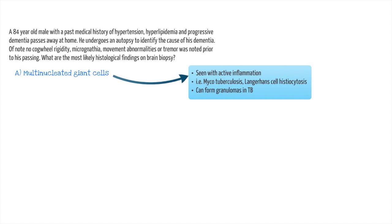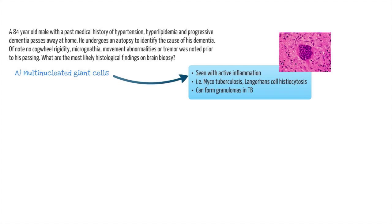Given these findings, let's proceed to look at the answers. Our first potential choice is multinucleated giant cells. As the name sounds, these are large cells that have more than one nucleus. They tend to arise during an active mycobacterium infection and will eventually form the granulomas seen in long-standing tuberculosis infection. Given infection is not a high consideration here — since there are no infectious symptoms or risky exposures — this makes choice A unlikely, especially since TB meningitis would not likely cause a progressive dementia.